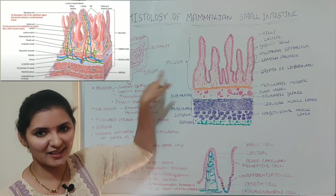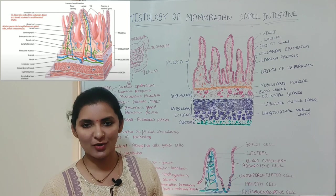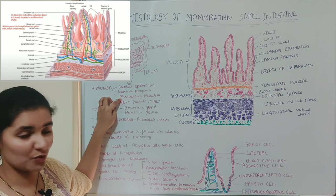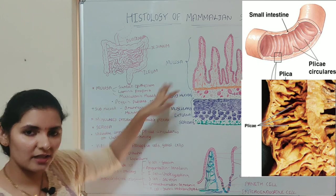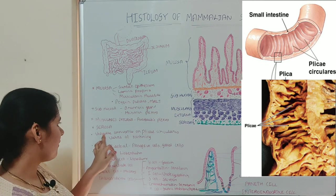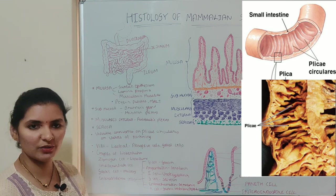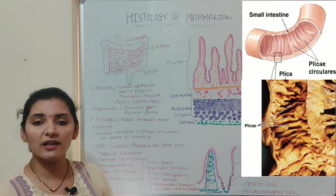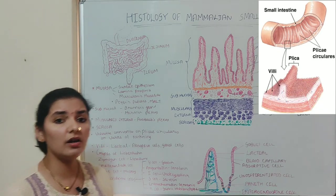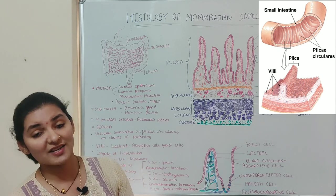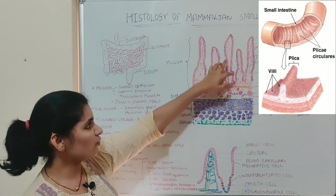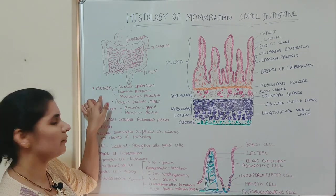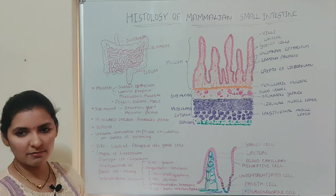Inner to submucosa is the mucosa layer, which is the innermost layer of the small intestine. It mainly consists of three components: surface epithelium, lamina propria, and muscularis mucosa. The mucosa layer of the small intestine forms a series of definite folds known as valvulae conniventes, or plicae circulares, or valves of Kerckring. On these folds, and over the entire inner surface of the mucosa, there are small finger-like projections known as villi.